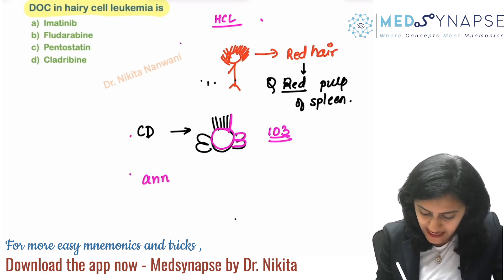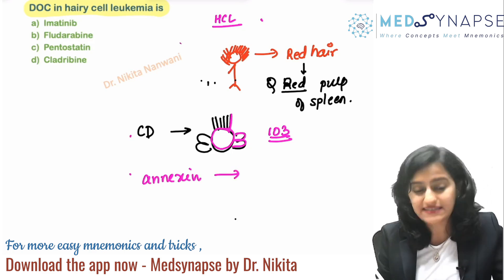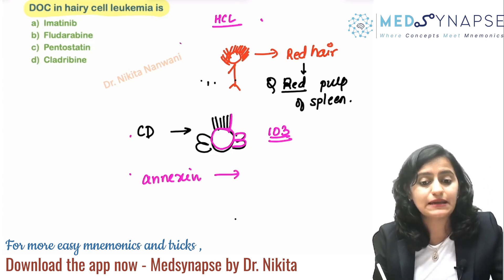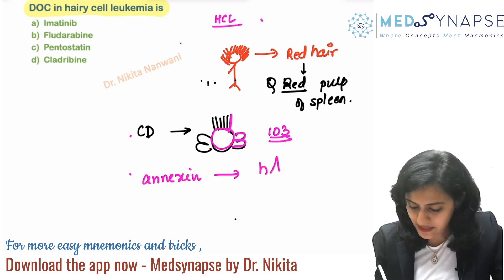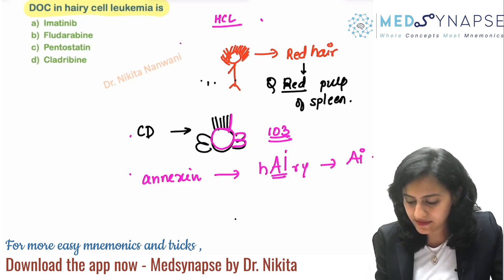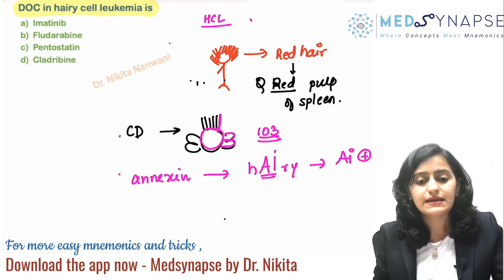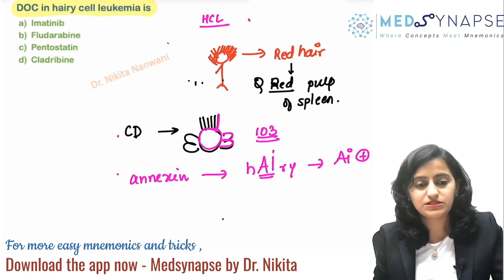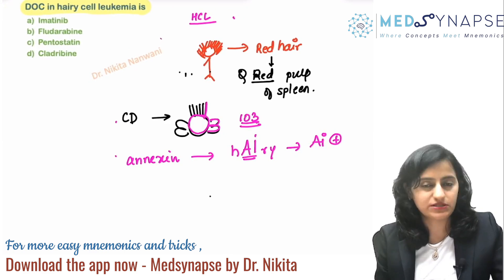Next question: what annexin is it positive for — annexin A1 or annexin A5? When you write hairy cell leukemia, remember 'AI' helps you recall that this is annexin A1 positive.